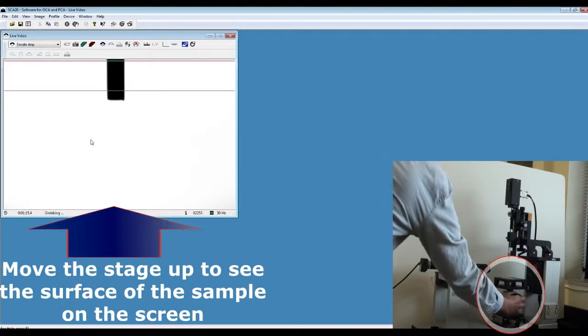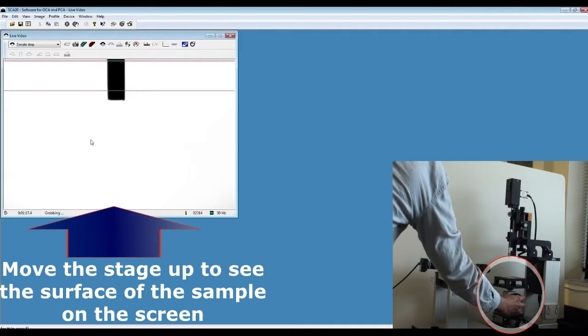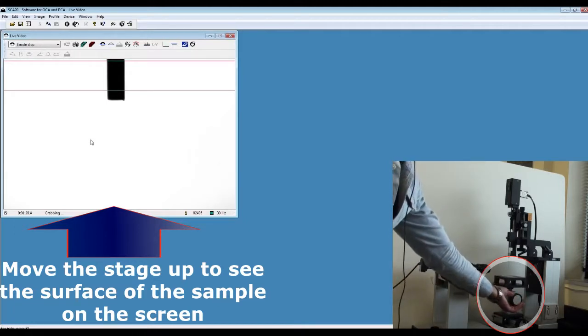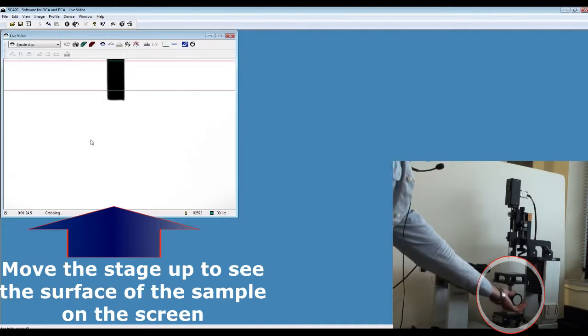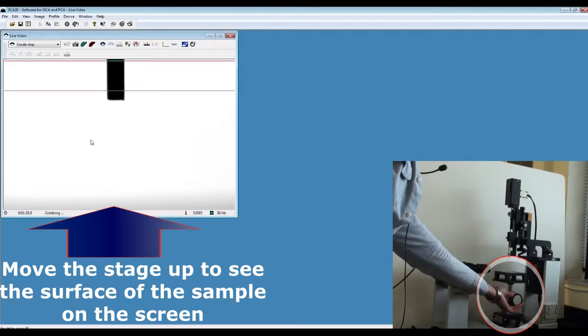Then bring up the sample using the designated knob for the stage, so you can see the sample in the live view window.